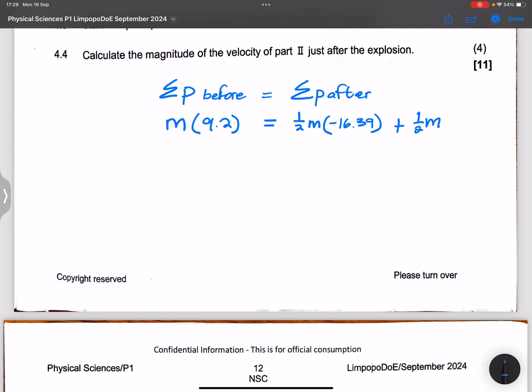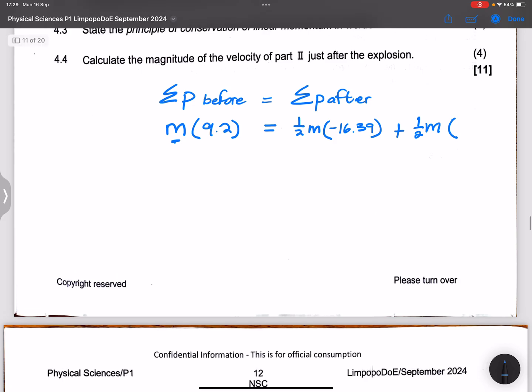Plus part two, remember it's half the mass, remember they broke in half, so that's half of m, the mass of the entire thing, multiplied by we are looking for the velocity of part two.